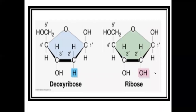You can see in this image that ribose sugar has an OH group at carbon number two. The ring is a pentose ring. Carbon number two has an OH group in ribose sugar, while in deoxyribose sugar only hydrogen is present — there is no OH group. This is the main difference between deoxyribose sugar, present in DNA, and ribose sugar, present in RNA.